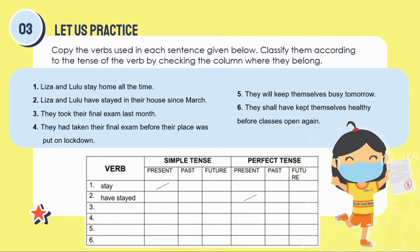For number 3: They took their final exam last month. For number 4: They had taken their final exam before their place was put on lockdown. For number 5: They will keep themselves busy tomorrow. For number 6: They shall have kept themselves healthy before classes open again. That's all for Let Us Practice.